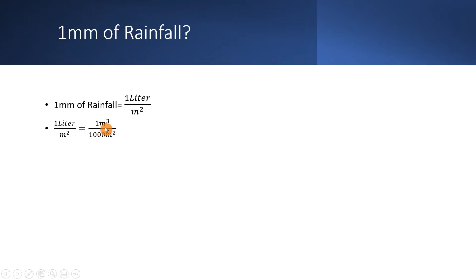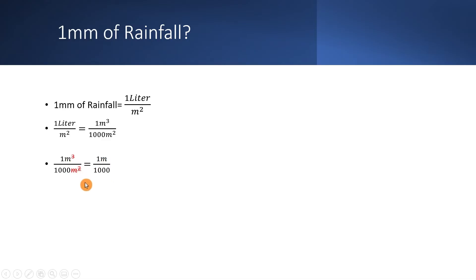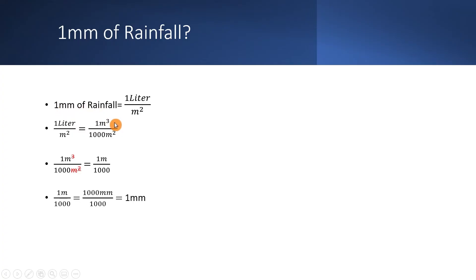So we place one divided by one thousand cubic meters in the expression. The cubic meters cancel with the square meters, leaving meters. That gives us one divided by one thousand meters. Converting meters to millimeters — since one meter equals one thousand millimeters — the thousands cancel and you get one millimeter. So one millimeter of rainfall means the rainfall collected in one square meter of area expressed in liters.